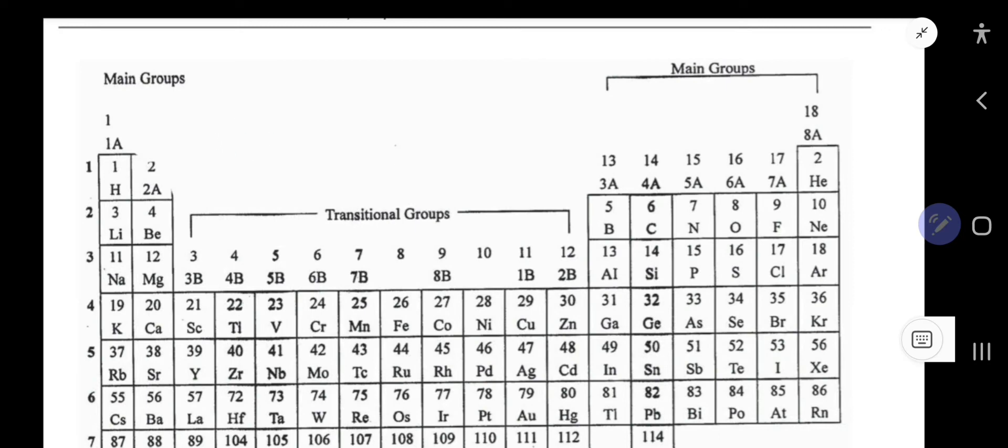We have to use the periodic table. In the periodic table, groups 1, 2, and groups 13 to 18 are the main group elements. For main group elements, group number equals valence electrons. Look, here is the element aluminum.